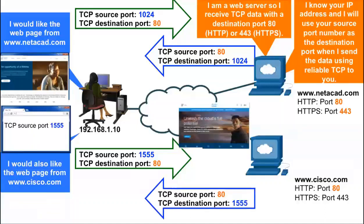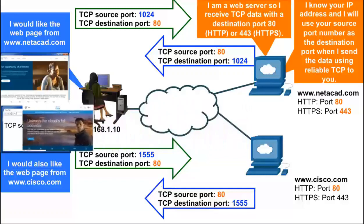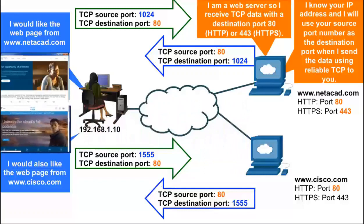When the www.cisco.com web server sends the specific client the data it has requested, it will be sent from its TCP source port 80, its HTTP application. The server will use the client's TCP source port as the TCP destination port, port 1555. When the client receives this information, it examines the destination port number to know which browser window the data is intended for.